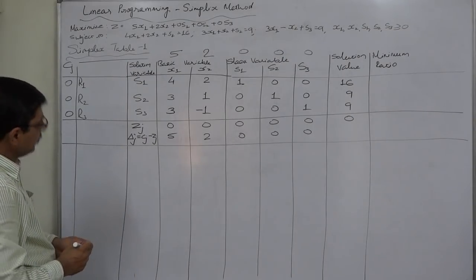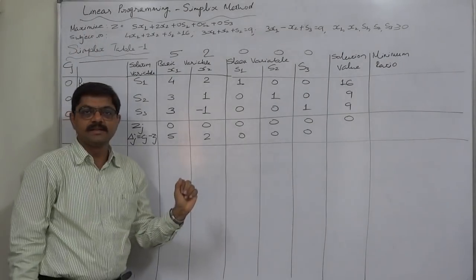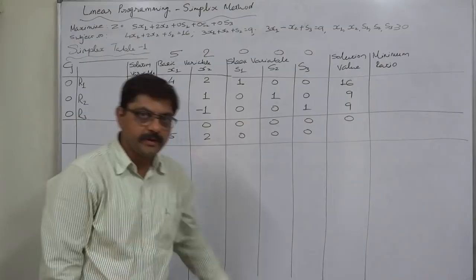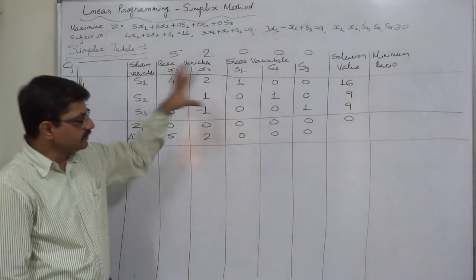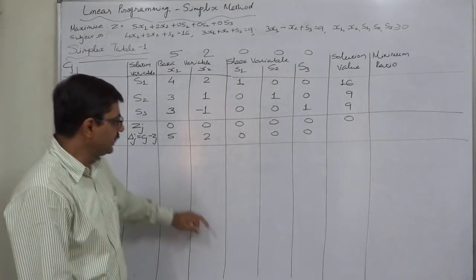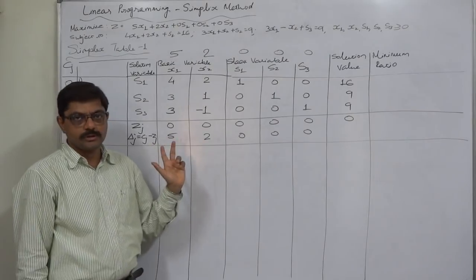Now our objective is maximization. In case of maximization problem to have the optimal solution all the delta J values should be 0 or negative, but in this particular simplex table these two are positive.